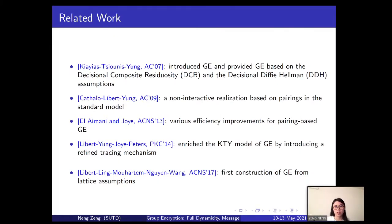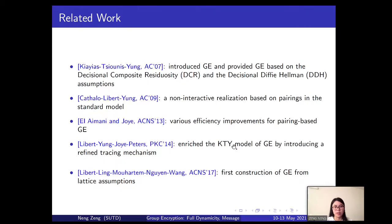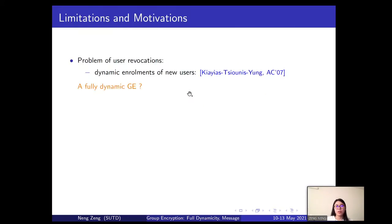Group encryption can also find interesting applications in anonymous trusted parties and oblivious retriever storage systems. In 2007, KTY introduced the model of group encryption and provided a concrete instantiation based on number-theoretic assumptions. Two years later, Kettler et al. proposed a non-interactive realization based on pairings in the standard model. Subsequently, Amelia and Joey presented various efficiency improvements for pairing-based group encryption, and Libet et al. proposed a refined tracing mechanism. In 2017, the first construction from lattice assumptions was presented by Libet et al.